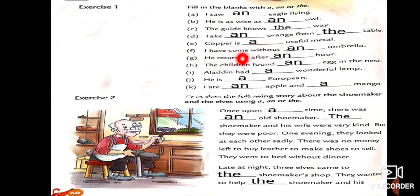Next. I have come without an umbrella. Here, first letter U is vowel. That's why we have used here article N. Next. He returned after an hour. Then, the children found an egg in the nest. Here, you can see first letter E. And this E is vowel. That's why we will use here article N. Then, Aladdin had a wonderful lamb. Next. He is a European. Next. I ate an apple and a mango.